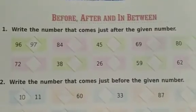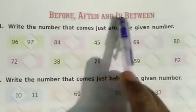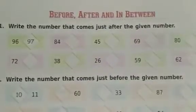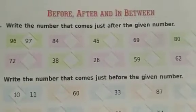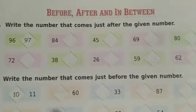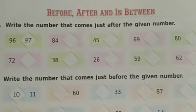Now we will read the next topic. The topic name is: Before, After, and In Between. That means — what will be the number before, what will be the number after, and what will be the number in between.